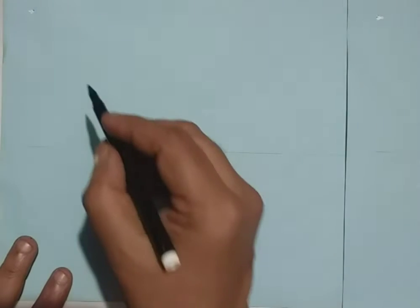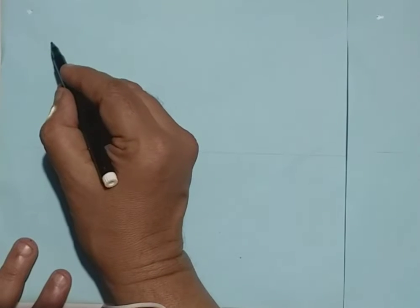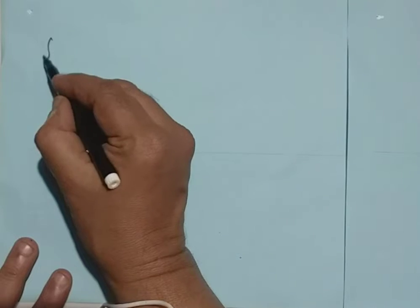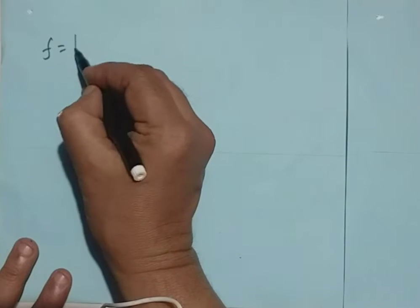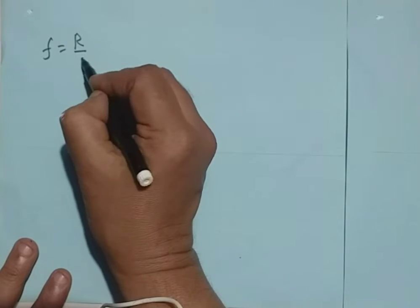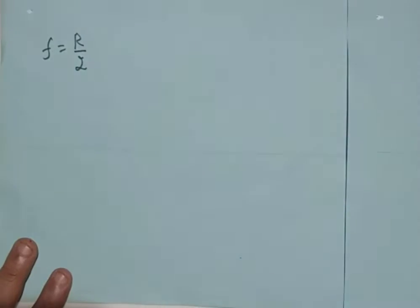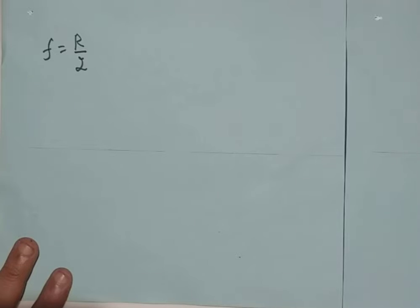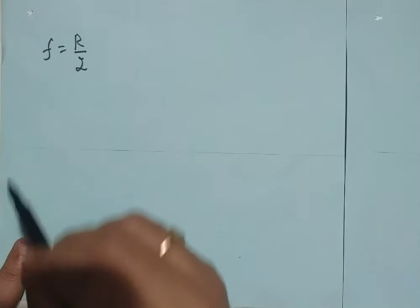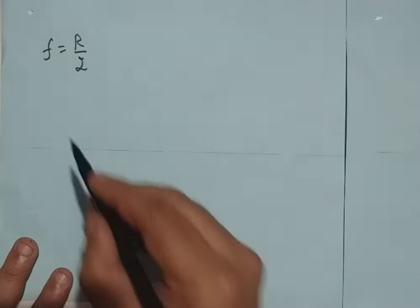The first formula what we learnt in this chapter is F equals R by 2, that is focal length of the spherical mirror is half of the radius of curvature.